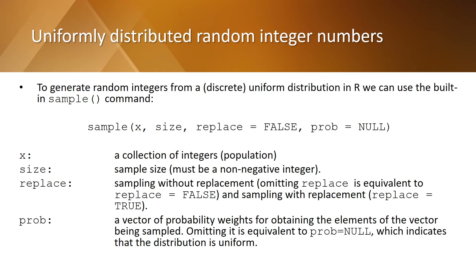To generate random integers from a uniform distribution in R, we can use the built-in sample command and add some information. First, indicate the population of interest. Second, indicate the sample size. Third, specify the sampling method. If the sampling is without replacement, you can omit replace or you can write replace equals false.